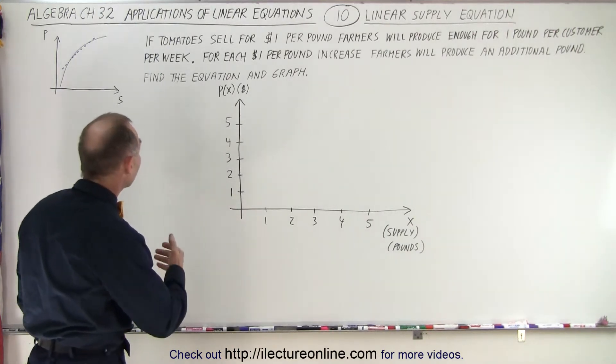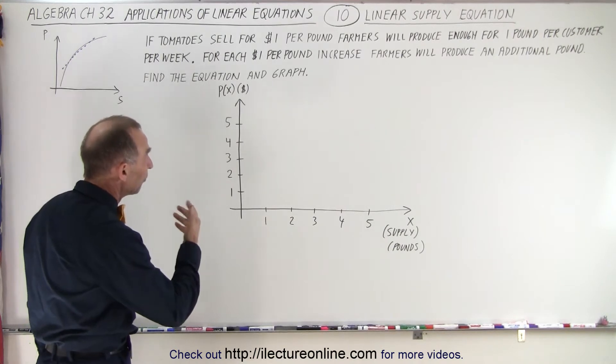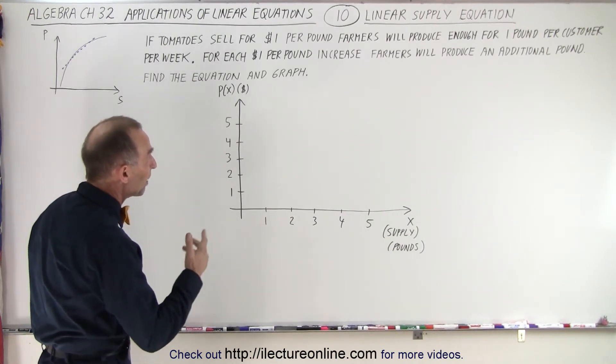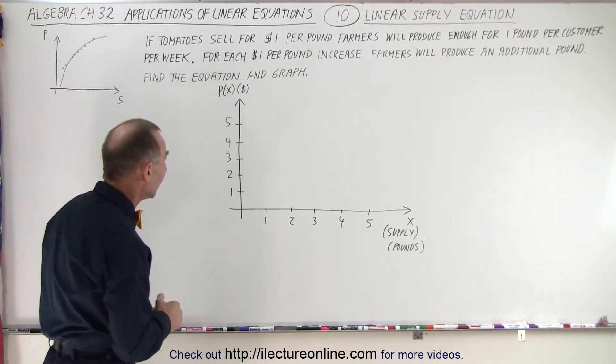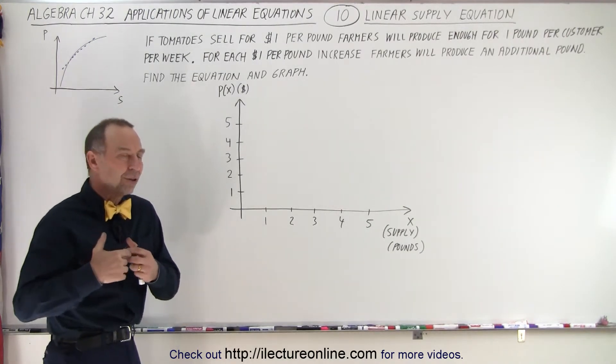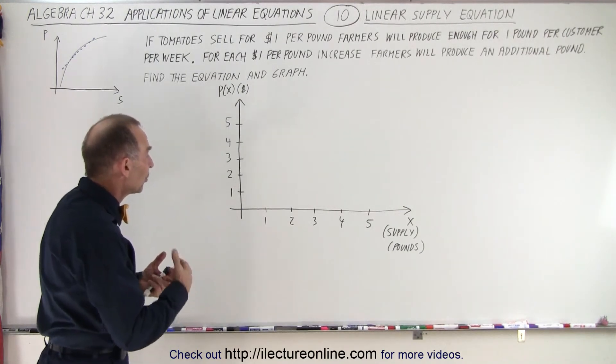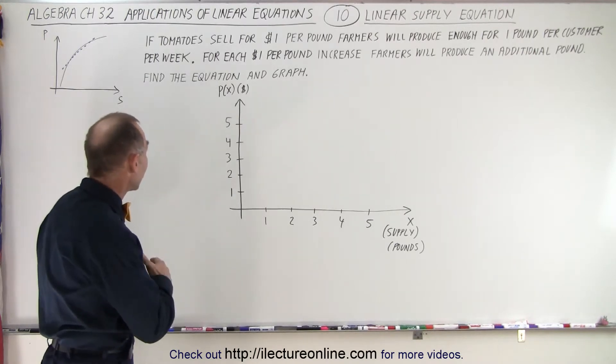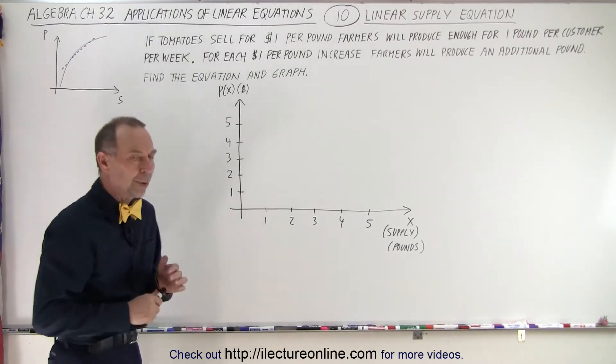We can see that if tomatoes sell for $1 per pound, farmers will produce enough for $1 per customer per week. But then for each additional dollar increase per pound, farmers will produce an additional one pound for each customer per week.